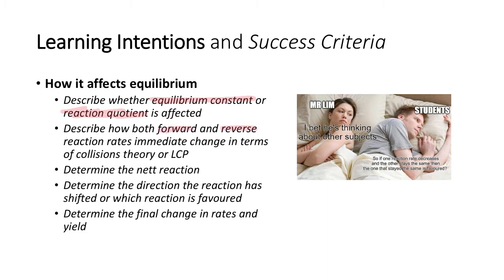The forward and reverse rates of reaction immediately change. In terms of collision theory, we're not even going to touch LCP. We'll determine the net rate of reaction — that's the overall rate of reaction, which one is greater than the other, which way the reaction has shifted or which way it's been favoured. And then the final changes in rates and yield. It's important to see that we have an immediate change and a final change, and they may be different or the same, but you have to know both of them.